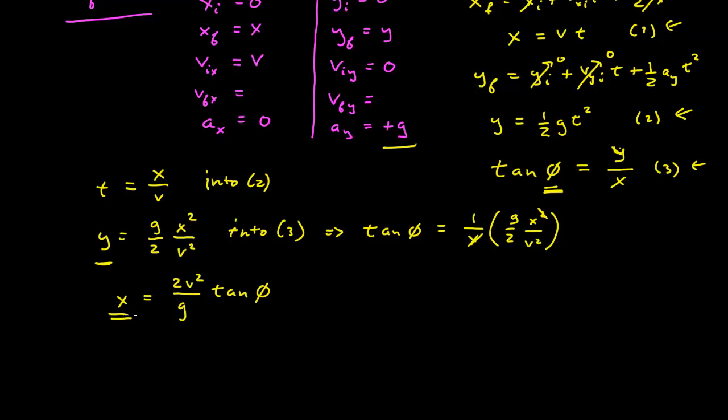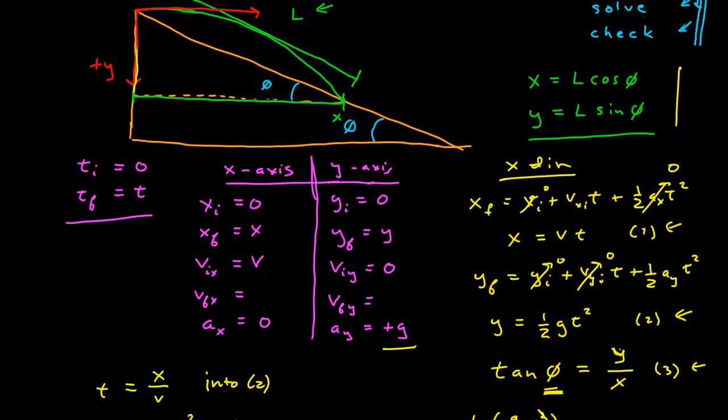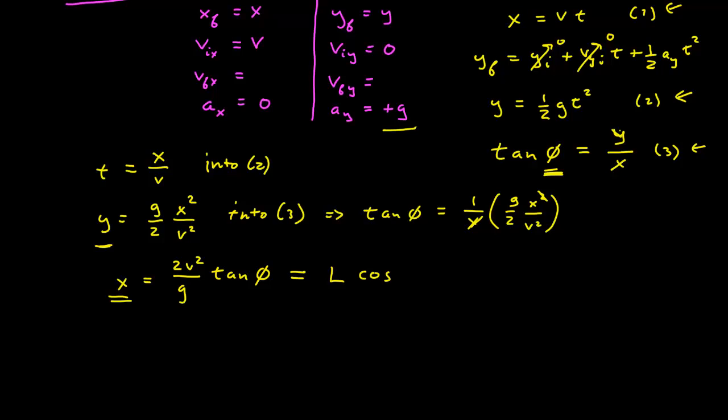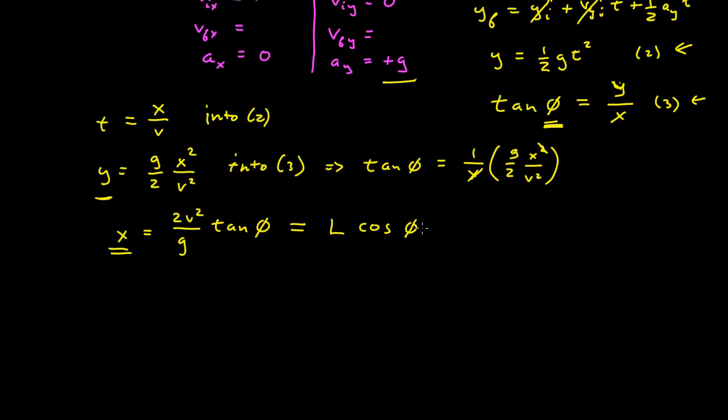And so now that we know x, we can substitute into there, into our first expression. So this is equal to the length down, which is what we initially needed to know, times cosine of phi. And now we can solve for our final answer. Our length is equal to two v squared over g tangent phi over cosine phi.